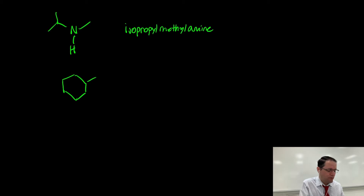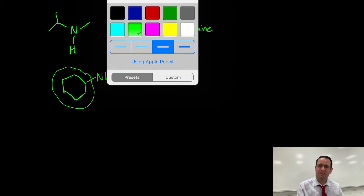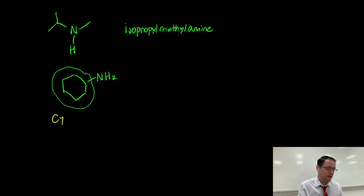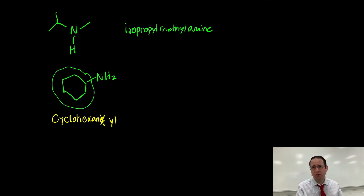You might have a ring. And once again, if you have a complicated ring, you name this as a group. You name the alkane and you change the ending to be -yl. And that's how you create a group that's now attached to the nitrogen. So this would be called cyclohexylamine.